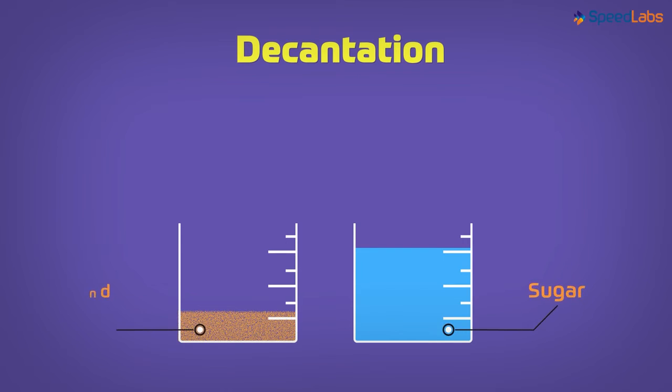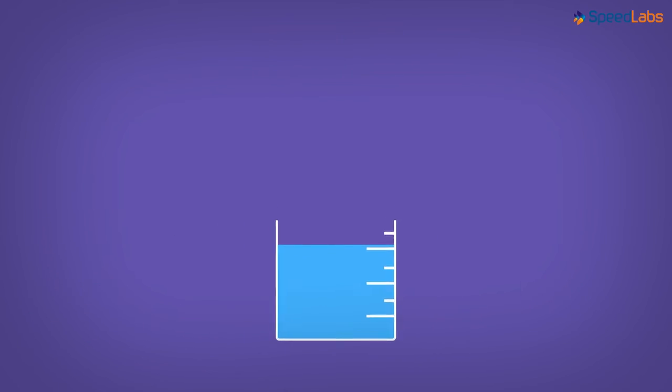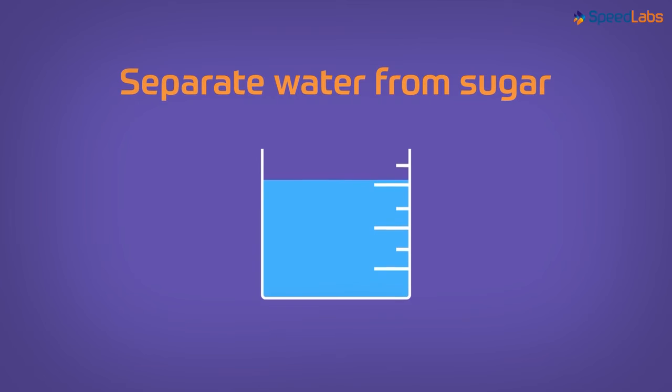That means, sugar and sand are separated. Was that our only aim? Well, yes! Separation of sand and sugar was our main aim. However, since water was added externally, now we need to separate water from the sugar.